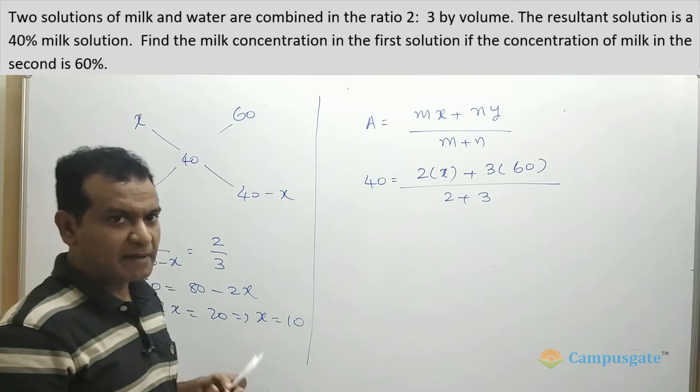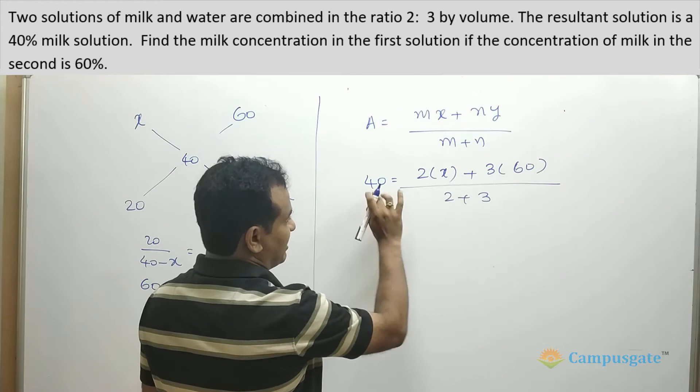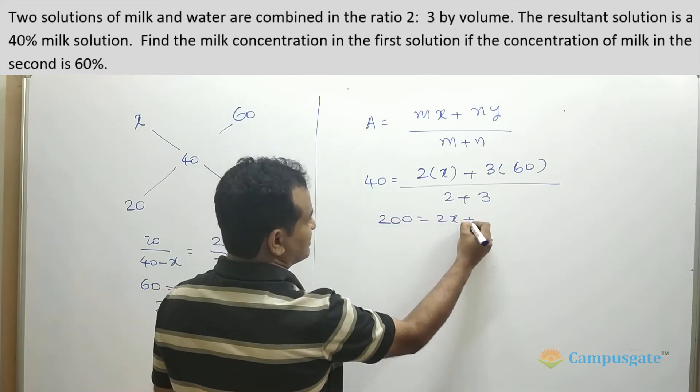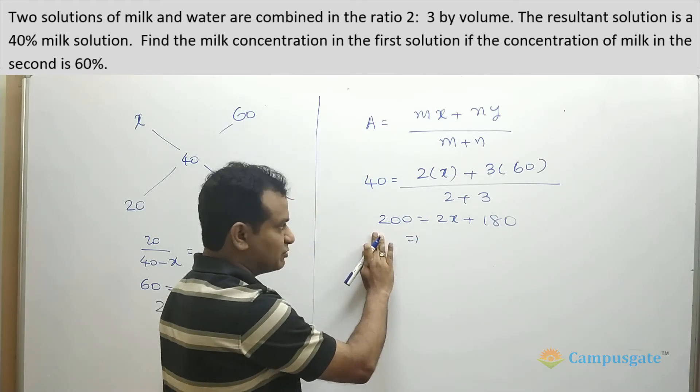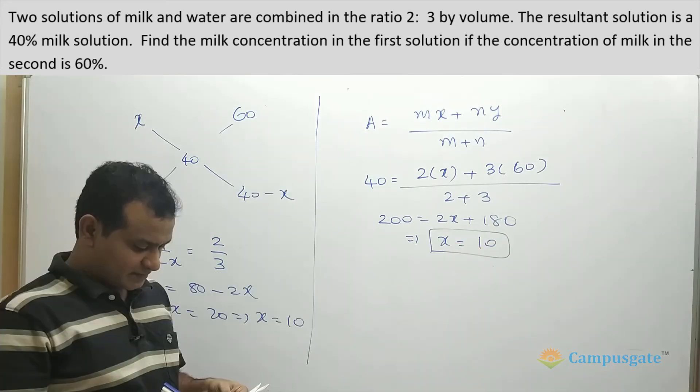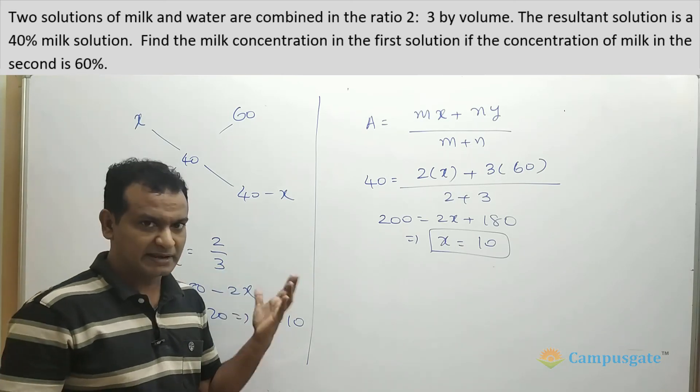So here M and N will become 2 and 3 respectively. Now we can simply cross multiply. So 5 into 40 will give you 200, which is equal to 2x plus 180. And 180 comes to this side which will become 20. So 20 equals 2x, that means x equals 10. So the concentration of the first solution is equal to 10%.